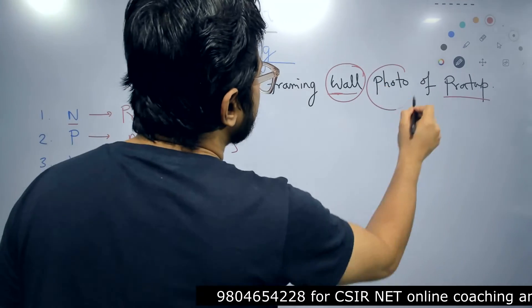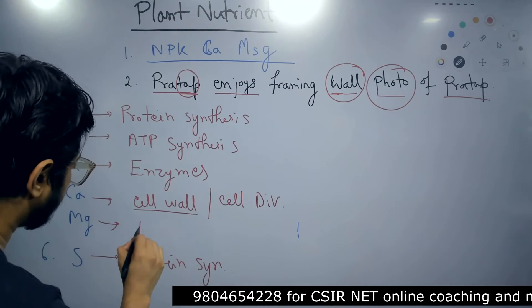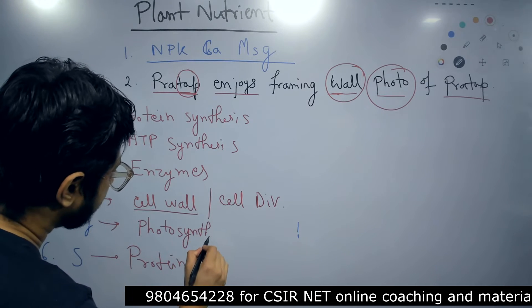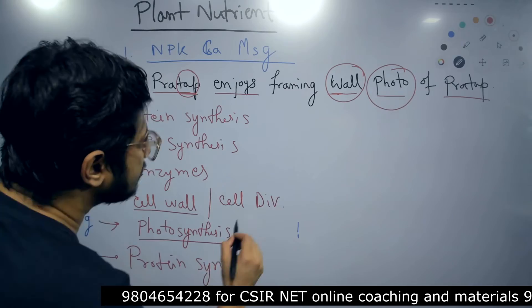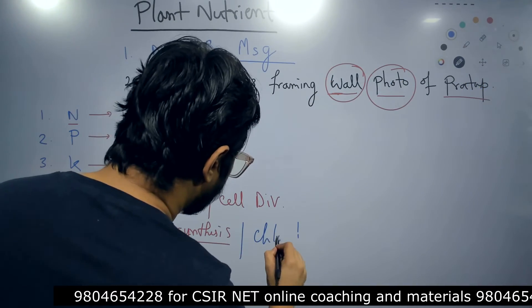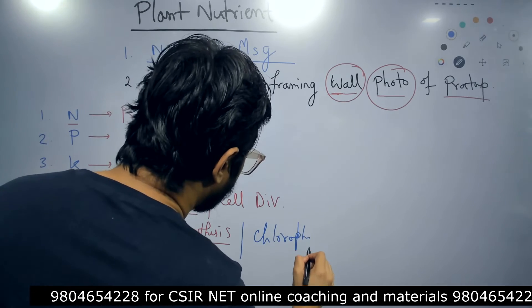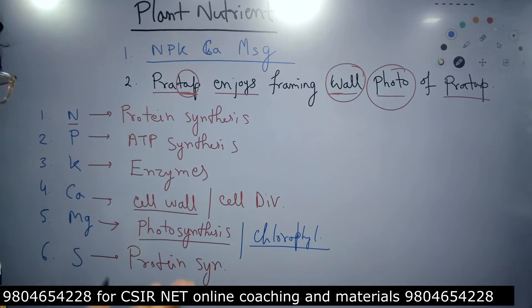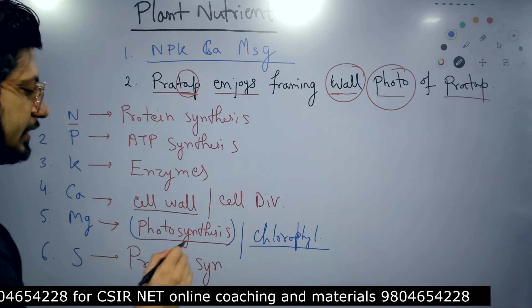And magnesium last, photo means involved in the photosynthesis. Photosynthesis. Why? Because it helps in the formation of the structure of chlorophyll. Okay. As they form structure of the chlorophyll, then magnesium is involved in the process of photosynthesis. That is how you can remember.